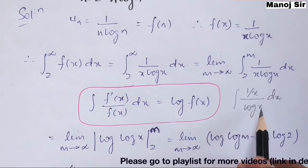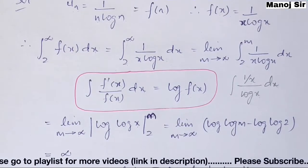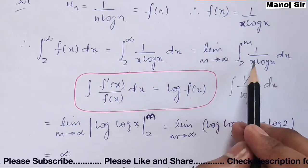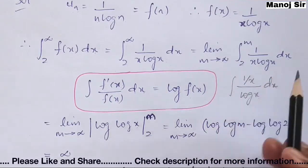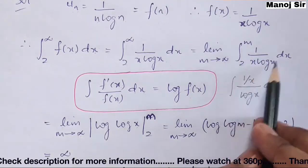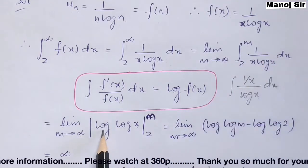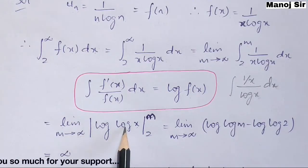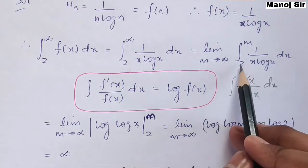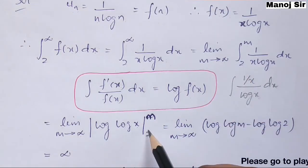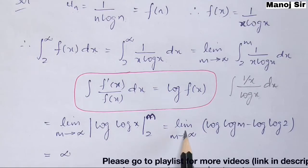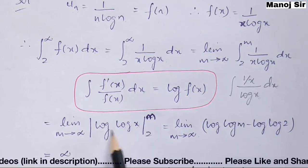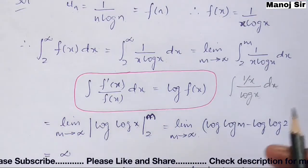So in the next step we write: limit as m tends to infinity, the value of the integration is log(log x) evaluated from 2 to m. Now we apply the limits: limit as m tends to infinity of [log(log m) minus log(log 2)].